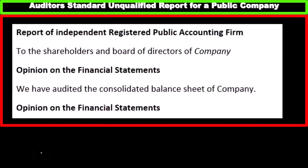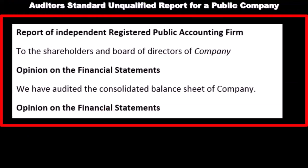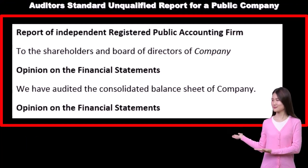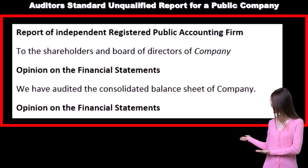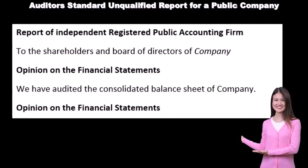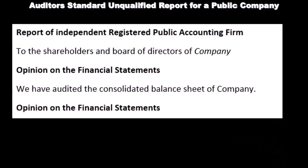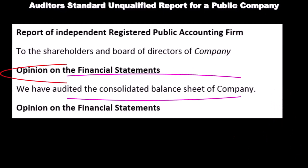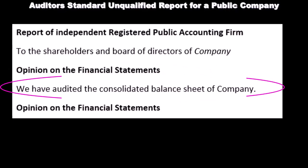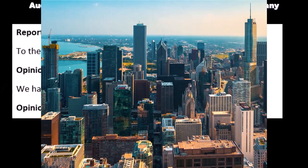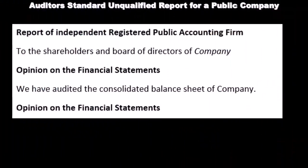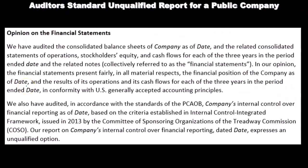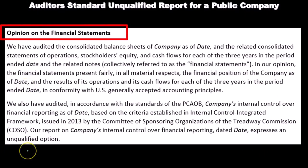Here we go with the components of the standard unqualified audit report. The title reads: 'Report of Independent Registered Public Accounting Firm.' The addressee is 'To the Shareholders and Board of Directors of the Company' — that's typically going to be the case. Next is 'Opinion on the Financial Statements.' This is where the heart of the report comes into play. We have audited the consolidated balance sheet of the company — wherever I say 'company,' that refers to whichever company is being audited.